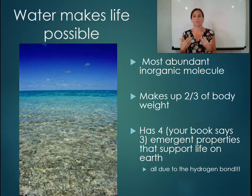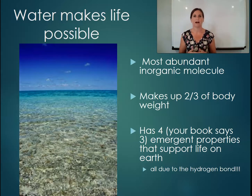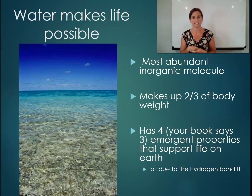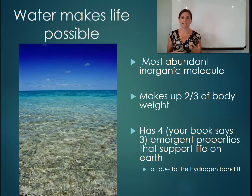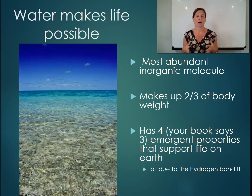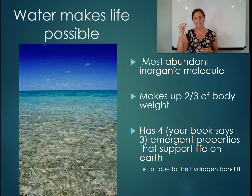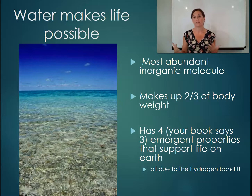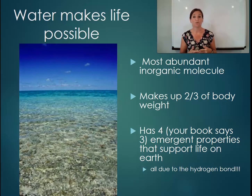Because two thirds of our body weight is made up of water, we don't see a lot of ionic bonds intact in our body — they definitely separate into ions. Water has four undeniably incredible properties, what we call emergent properties, that make life possible on earth, and most of these are due to the structure of water.